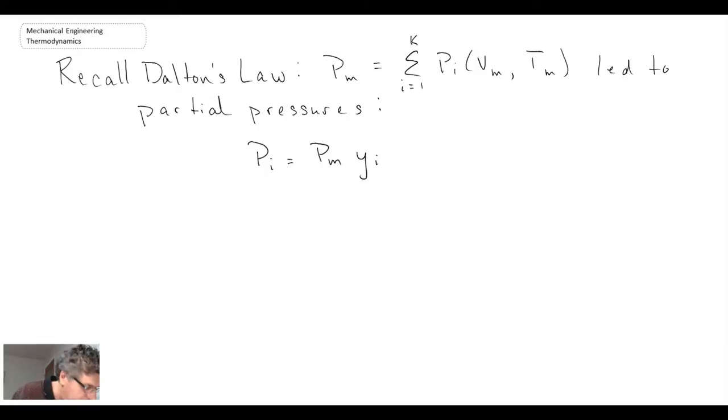So consequently when looking at atmospheric air, what we can say is that the pressure is going to be the partial pressure due to the air plus the partial pressure due to the water vapor.